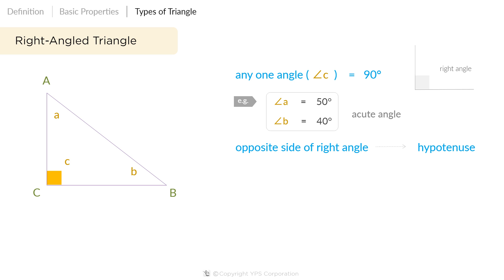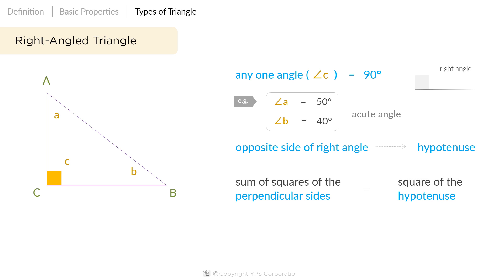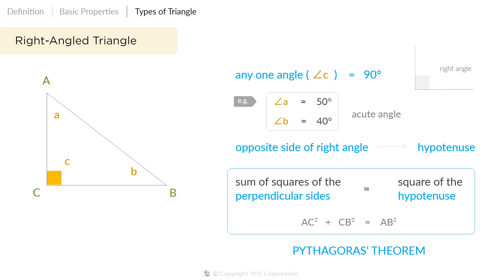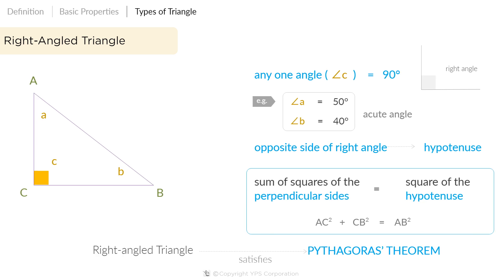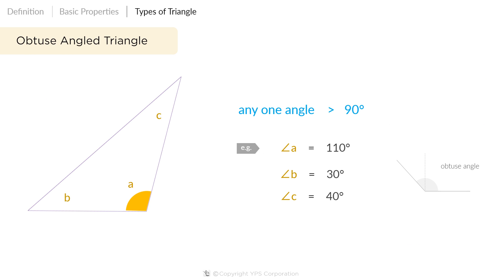You should also note that the sum of the squares of the perpendicular sides is equal to the square of the hypotenuse. For example, AC² + CB² = AB², also known as the Pythagoras theorem. Thus, if a triangle satisfies the Pythagoras condition, then it is a right angle triangle. A triangle that has one angle that measures more than 90 degrees is an obtuse angle triangle.